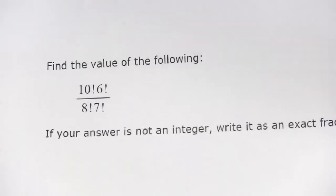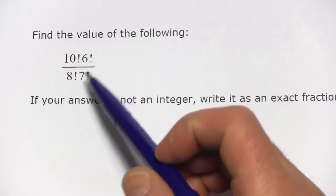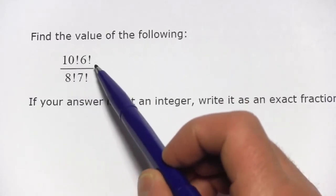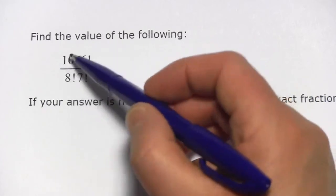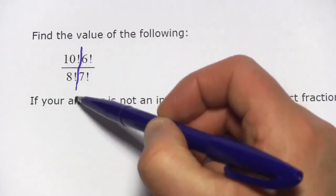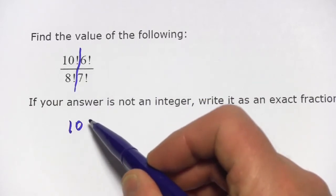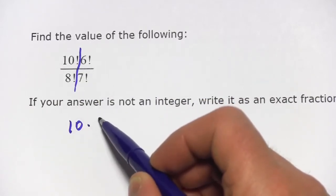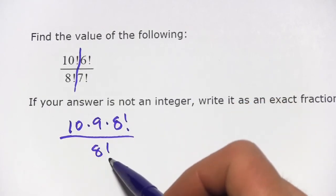Alright, let's look at another one. So we want to find the value of the following. We've got 10 factorial times 6 factorial over 8 factorial times 7 factorial. I'm going to take this as sort of two problems and look at the 10 factorial over 8 factorial part first. So 10 factorial is 10 times 9 times 8 factorial. That's going to cancel with my 8 factorial.